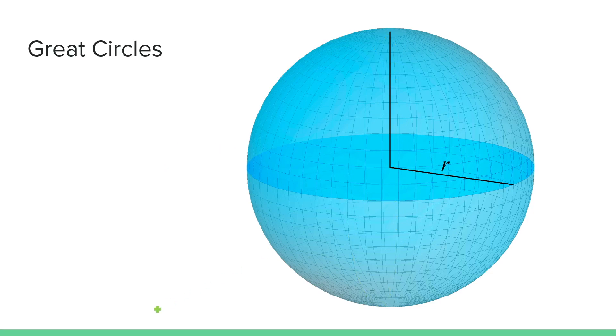Euclid's first axiom can be rewritten for spherical geometry in terms of great circles. That is, for any two points, there exists a great circle that connects the two points. Or in other words, a straight line in spherical geometry is a great circle. The shortest distance between two points on a sphere always lies on a great circle.